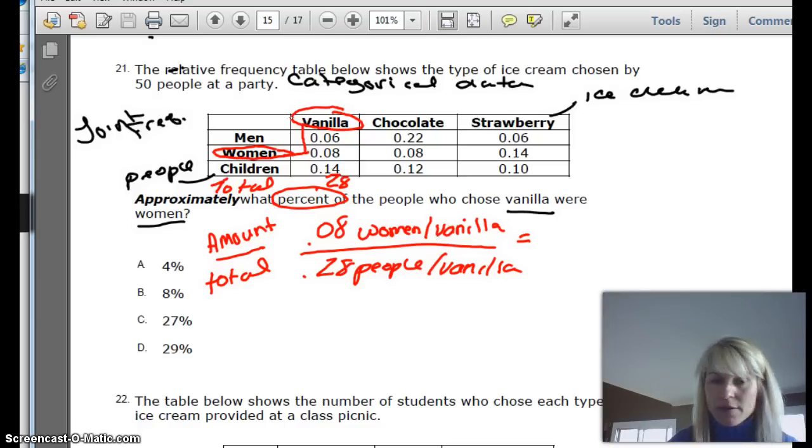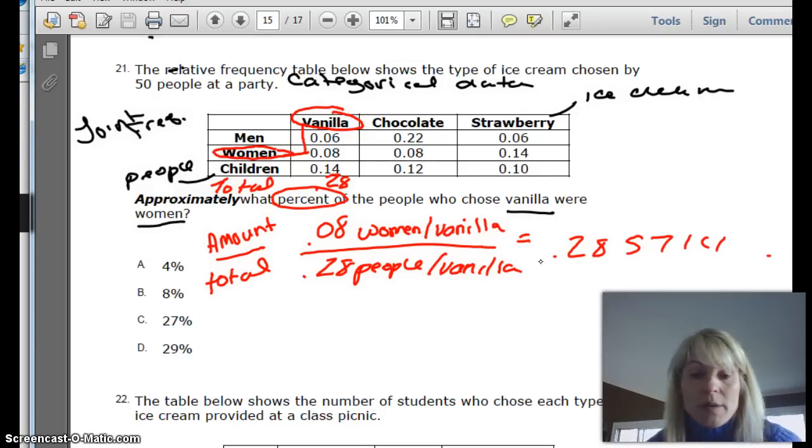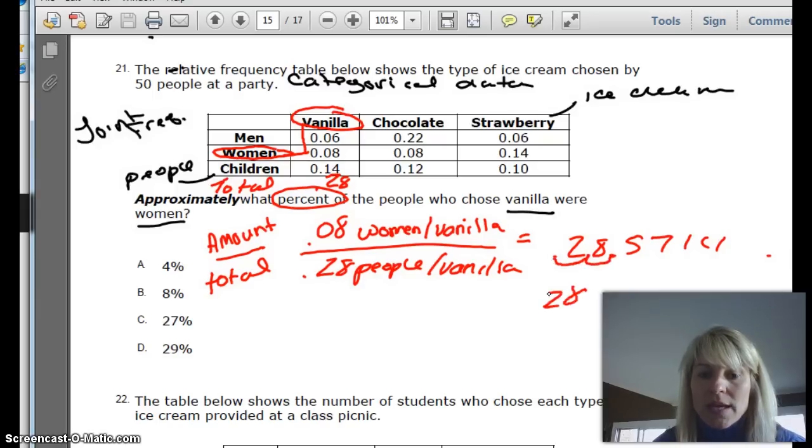And on our calculators, I get 0.285714. And then you know that when we're doing percents, we're talking about out of 100. So we multiply this by 100. There's two zeros in 100. So any time you multiply it by 100, it just moves this back two places. So I get 28.5. Actually, we could say, if we rounded that place, we could say 6%. And so if I look at my choices, letter D, it rounds to 29%.